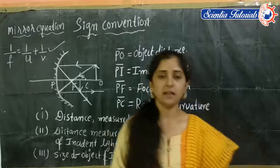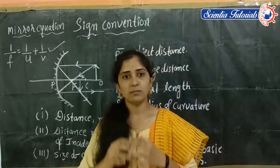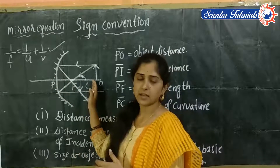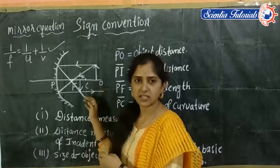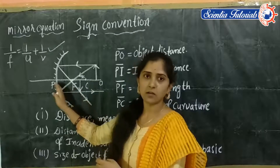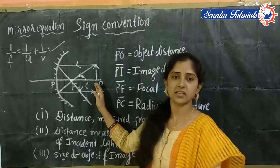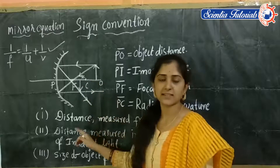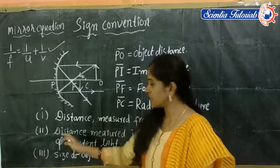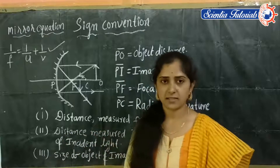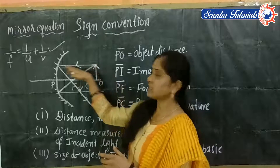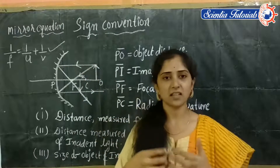The first rule is that we have to measure all distances from the pole — that means object distance, image distance, focal length, and radius of curvature must all be measured from the pole. The second rule is that all distances should be measured in the direction of the incident light.